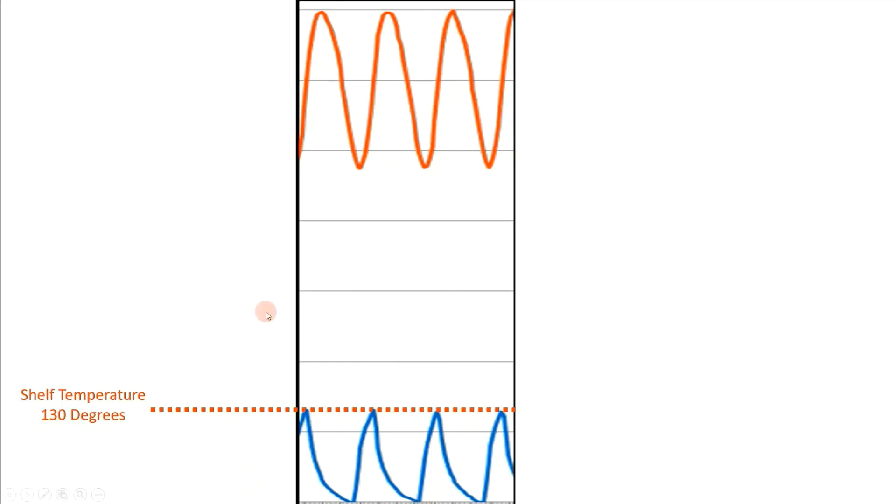What triggers the shelf temperature is the upper and lower vacuum limit. When the vacuum reaches around 600 millitorr, it will tell the shelves to turn off, so the shelves will start to cool down. When the vacuum reaches 500 millitorr, the maximum amount that we need, the shelf temperature will turn on and will go from a cooler shelf up to 130 degrees.